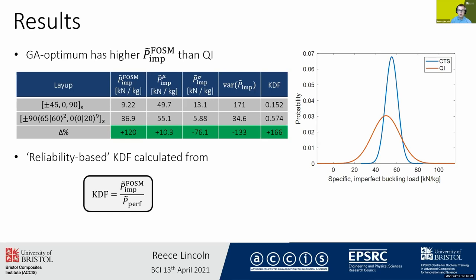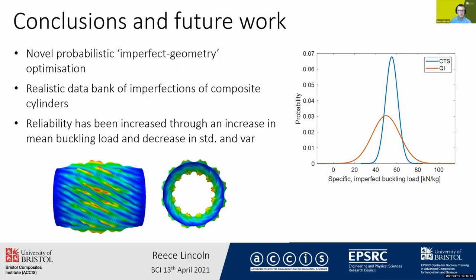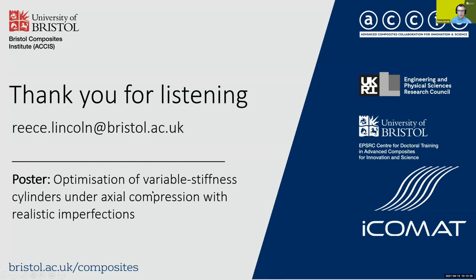In conclusion, we've used a novel imperfect geometry optimization within an Abaqus–Python environment and a realistic data bank of imperfections. This has enabled us to achieve a higher mean buckling load but also a decreased standard deviation and variance, which leads to a higher reliability. Thank you very much for listening, and I'll be happy to answer your questions in the poster session.